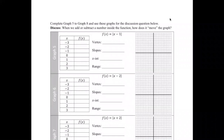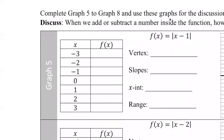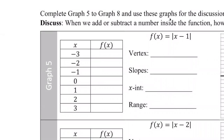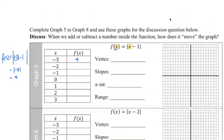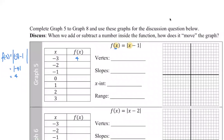On the next page for graph number five, there's a little difference but the procedure is the same. When x equals negative three, we replace all the x's with negative three. So f of negative three equals the absolute value of negative three minus one. Negative three minus one is negative four, and the absolute value of negative four is four. So we have the point negative three comma four.